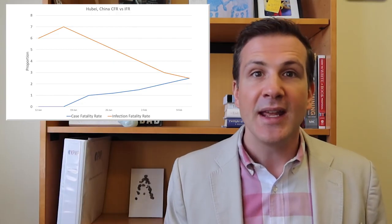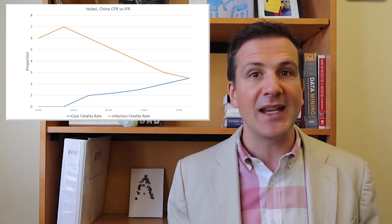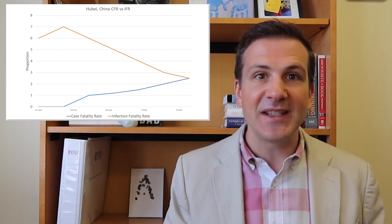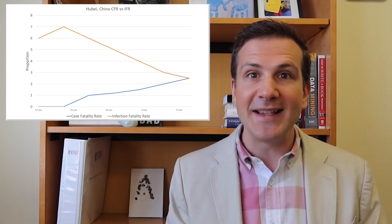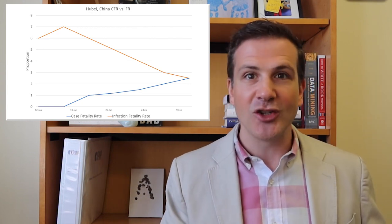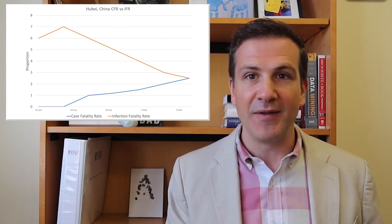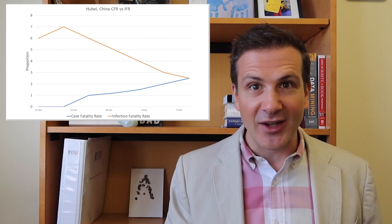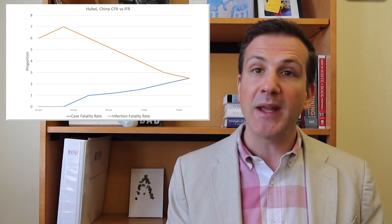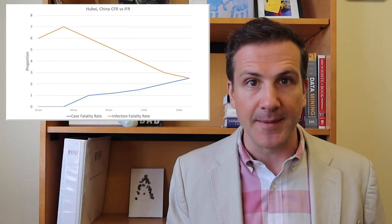It can also show us how an individual country is improving in managing these cases over time. Here's the temporal trend in infection fatality rate from Hubei, China, for example. You can see that while the case fatality rate was rising — due to that right-censoring problem, deaths catching up with the initial explosion of the epidemic — the infection fatality rate was falling, evidence that the doctors there were getting a bit better at treating COVID-19.